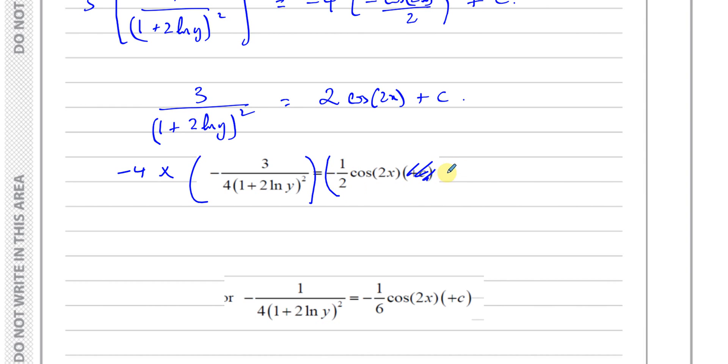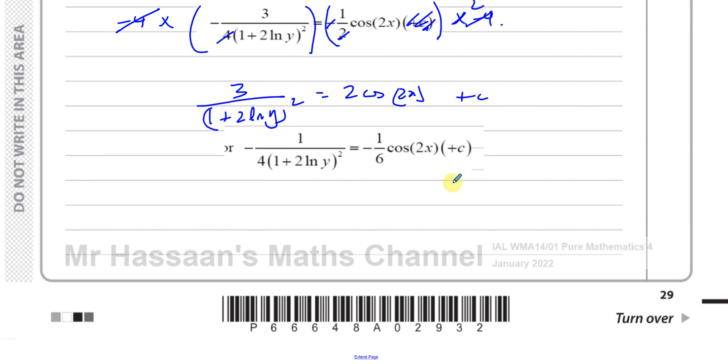I've taken minus four and multiplied it by this side, and the plus c I put at the end. If you multiply this side by minus four, it becomes positive, the four and the four cancel, you're left with 3 over (1 + 2ln y)² equals minus and minus cancel out, the four and two cancel out, you're left with 2cos(2x). It's exactly the same as what I've written, just put the plus c here at the end.